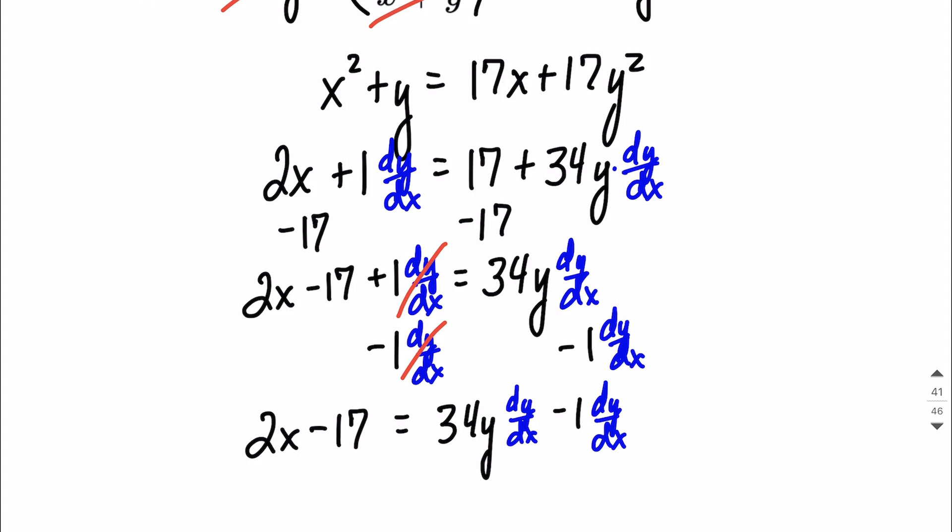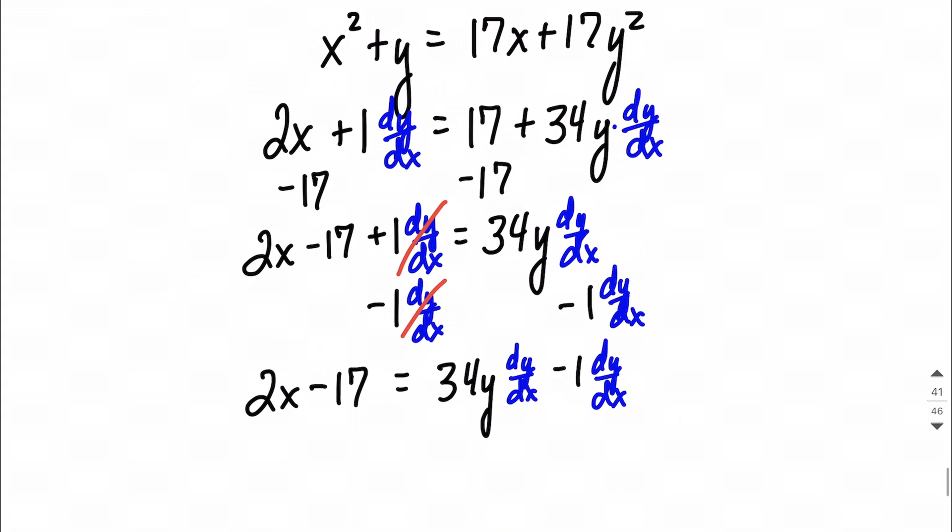Trying to show all my work and take my time, not skip through any of these steps. You'll notice that each one of those terms on the right-hand side now has a dy dx. So that's referred to as a common factor. We can say dy dx can be removed or factored out here.